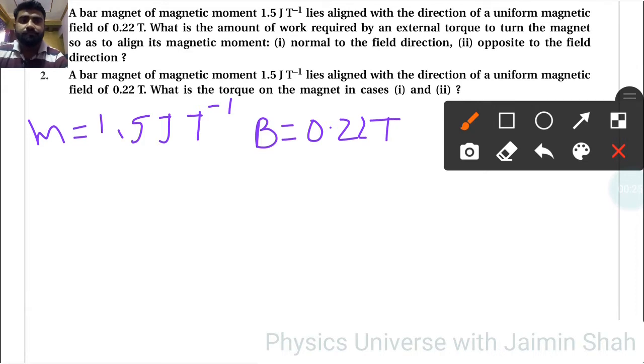First of all, we have to find that work by aligning them normal to the field direction. So that formula is W = mB(cos θ₁ - cos θ₂). By this equation you can find work.